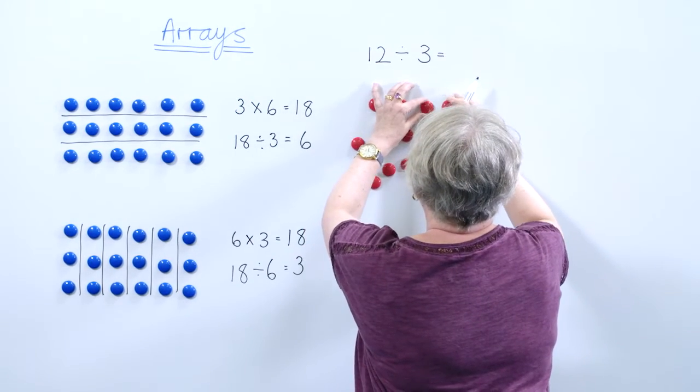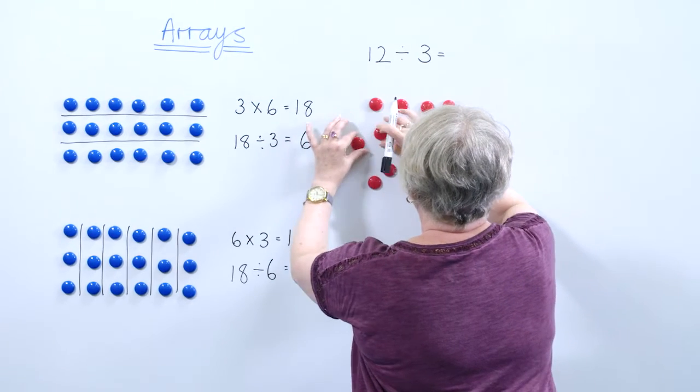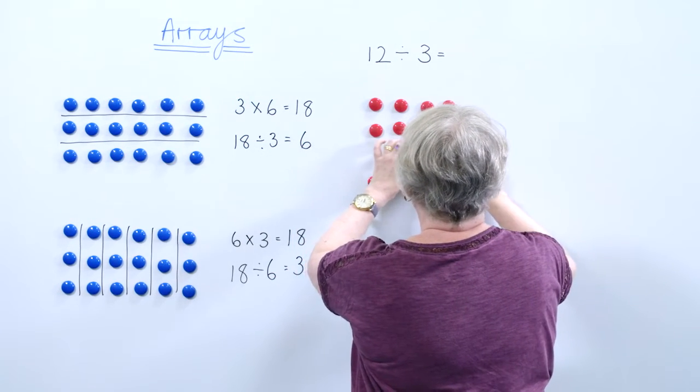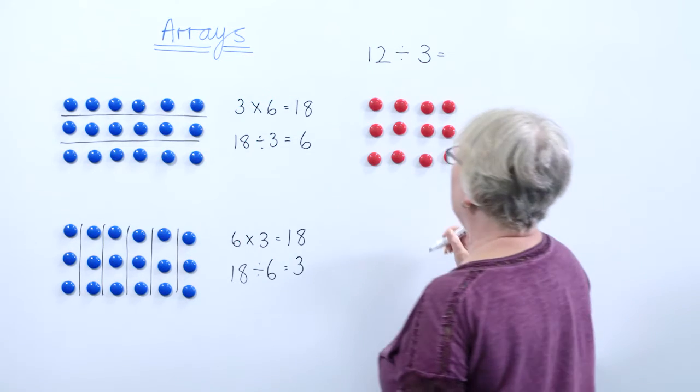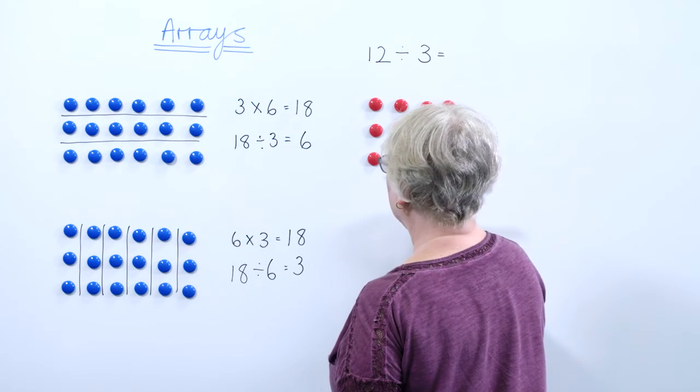So here we go. Making sure that my rows are exactly the same. There we are. I've got my 12 counters arranged. I have divided them by three.